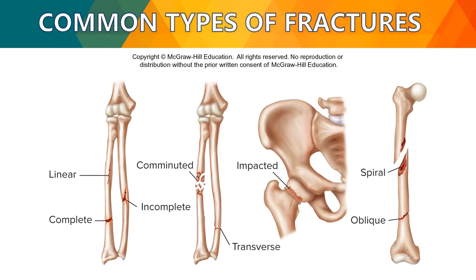Common types of fractures include linear, complete, incomplete, comminuted (broken into pieces), transverse (a cross-section fracture), impacted (bones forced into contact due to excessive pressure), spiral, and oblique types. These fractures can occur due to accidents or excessive pressure during exercises or athletic activities.